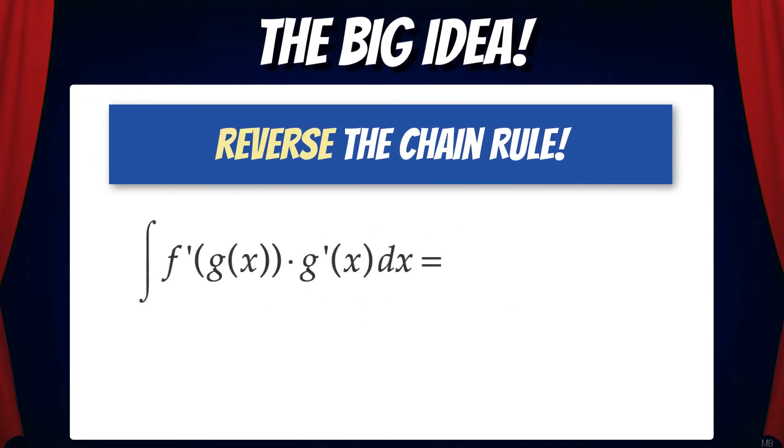Well suppose we need to reverse the chain rule. So the idea is if we start with the integral of f prime of g of x times g prime of x dx, then that would equal f of g of x plus c, the antiderivative.